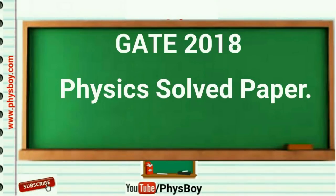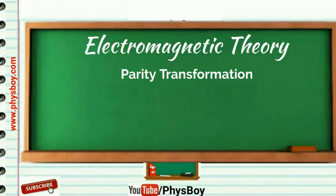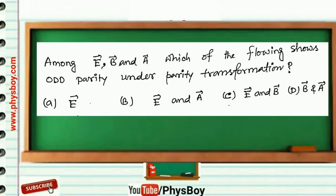I am going to share an odd parity problem from electromagnetic theory. The question was: Among E vector, B vector, and A vector, which of the following shows odd parity under parity transformation?